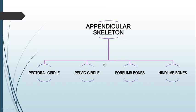In this video we're going to learn about the appendicular skeleton of the frog. In our previous video we learned about the axial skeleton, which includes the skull and vertebral column. Now we'll be studying the appendicular skeleton of frog, which comprises the pectoral girdle, pelvic girdle, and bones of the hind limbs and forelimbs. Our learning objective is to know about the different bones of these two girdles and their functions.